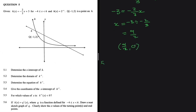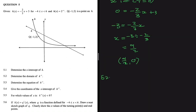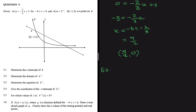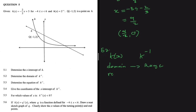5.2 asks us to determine the domain of k inverse. We're given the equation of k of x and its domain. The key relationship is: the domain of k of x is the range of k inverse, and the range of k of x is the domain of k inverse. This works for all functions and their inverses, not just this particular case.